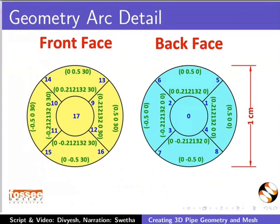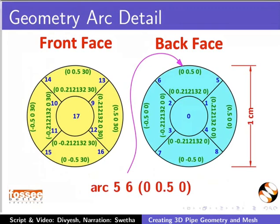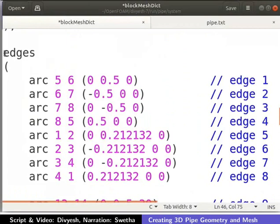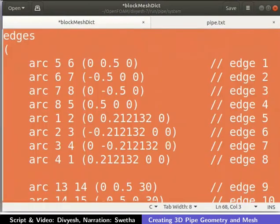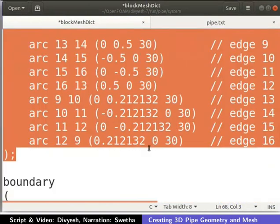However, any other point through which the arc passes is acceptable. For example, the edge from point number 5 to 6 is passing through (0 0.5 0). All 16 arcs are defined in the edges section in the blockMeshDict file as shown.